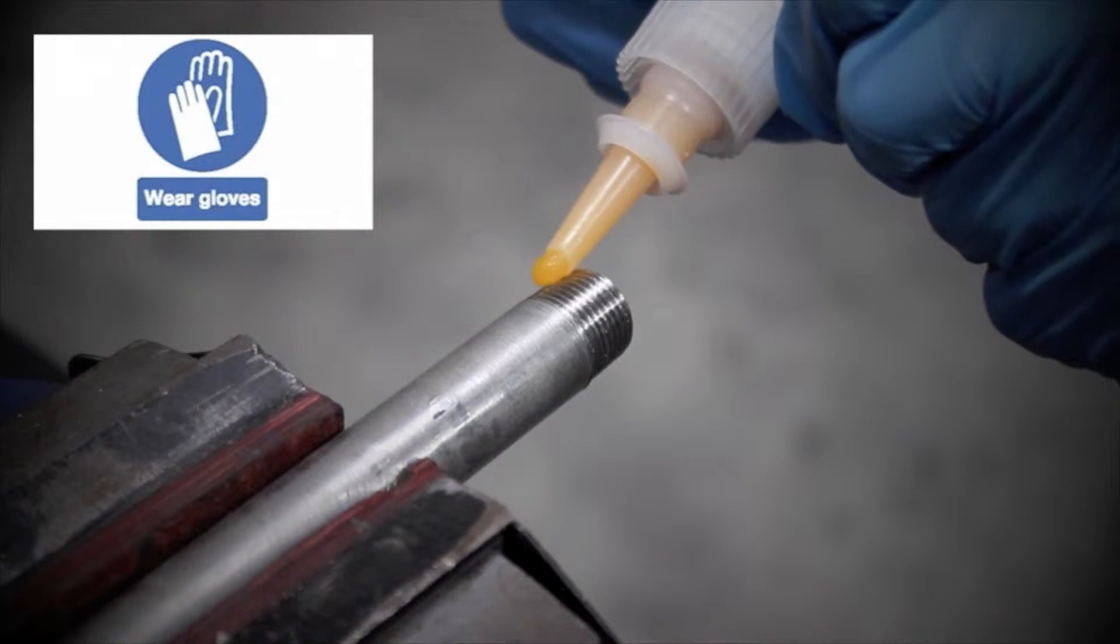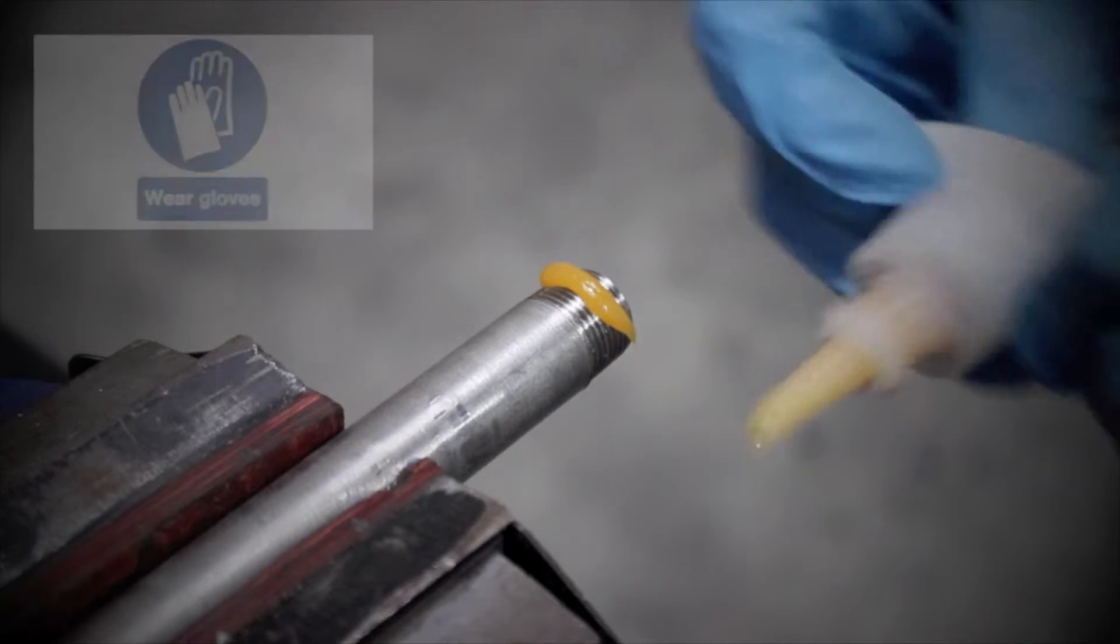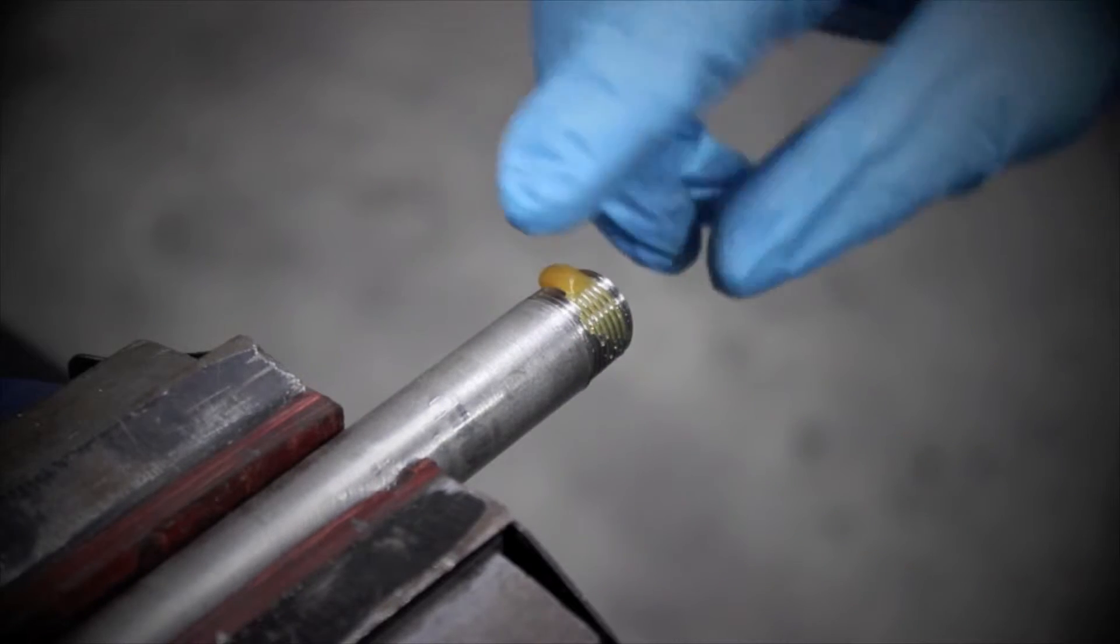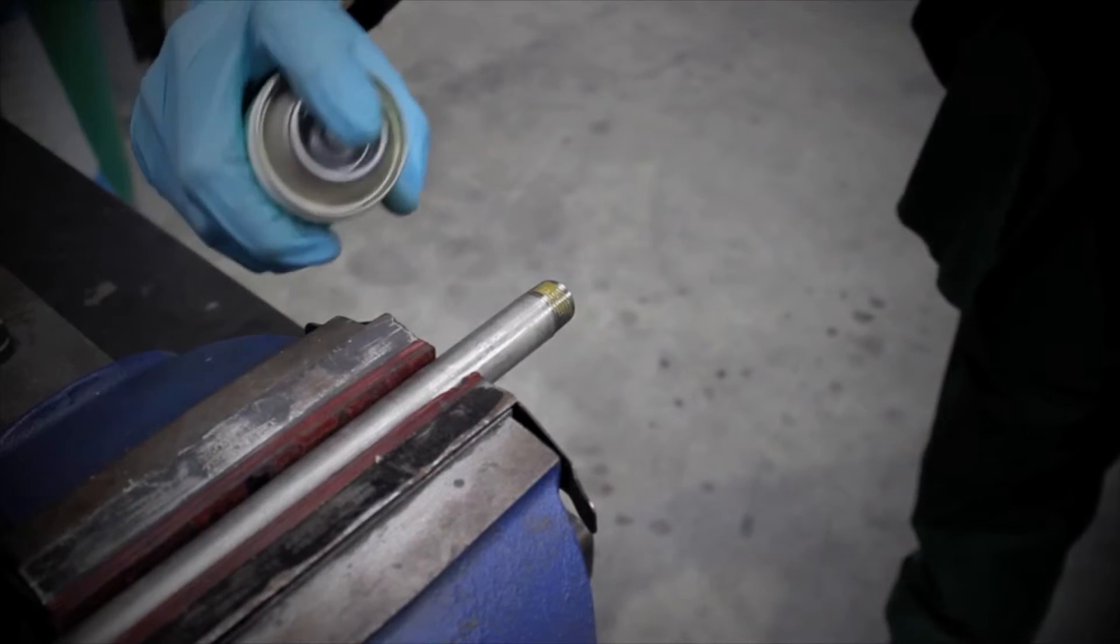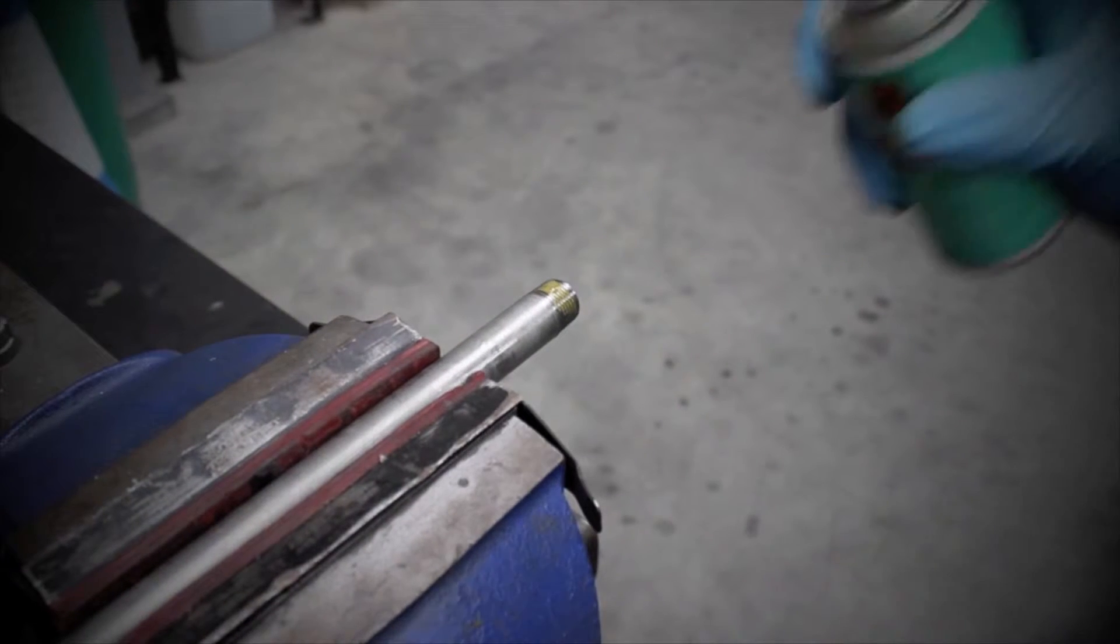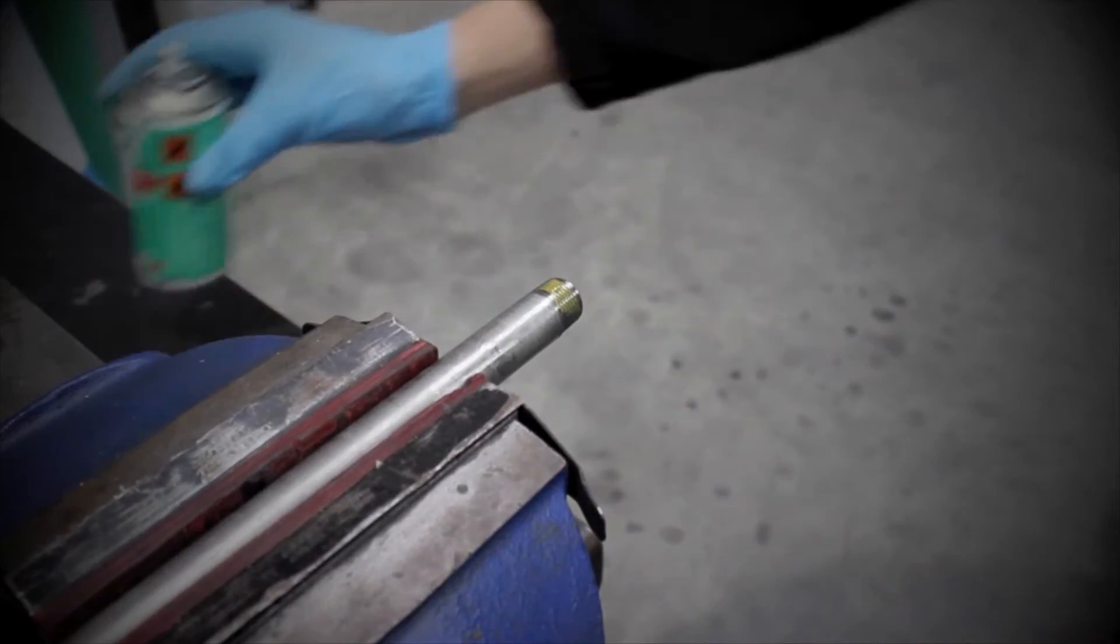Whilst the feed pipe is in the vise, apply the sealant evenly across the thread. It's recommended that gloves are worn during this activity. Now apply the sealant activator. This should be completed in a well-vented area.